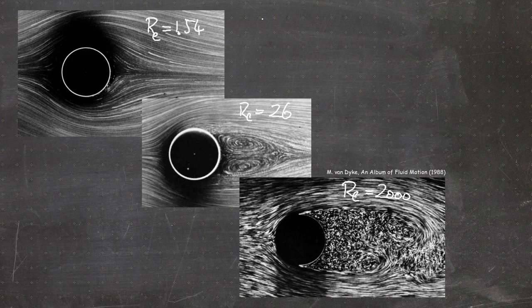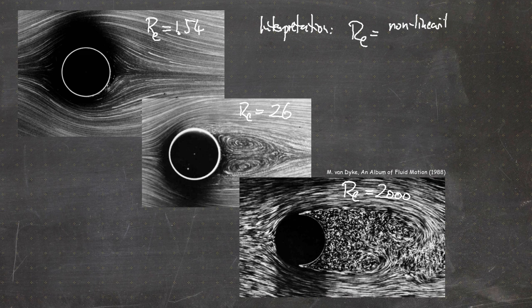One interpretation of the Reynolds number is that it is the quotient of the nonlinearity over the dissipation — where the nonlinearity is the part which drives turbulence and dissipation is the part which reduces it. This is why at a low Reynolds number, with a small nonlinearity term or large dissipation, we do not have turbulence. If we have a large Reynolds number, the nonlinearity driving force is large and we get a state of fully developed turbulence.